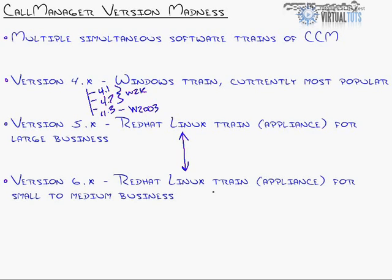The writing is on the wall: the 4.x version is currently the most popular and will likely remain so for another two to three years. It's stable, tested, tried and true, and people are familiar with it. The 5.x and 6.x versions are the newer ones - 5.x is designed for large business and is the direct replacement for 4.x in an appliance model, though it's still relatively brand new.